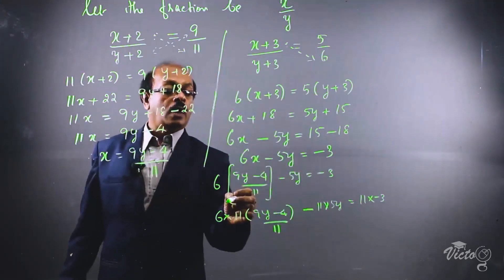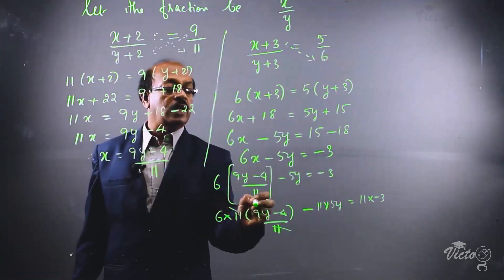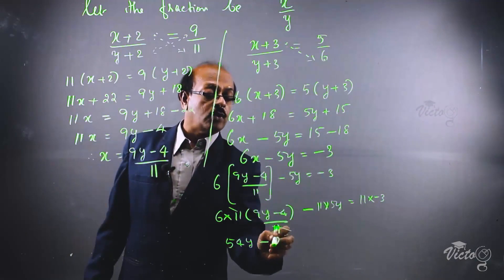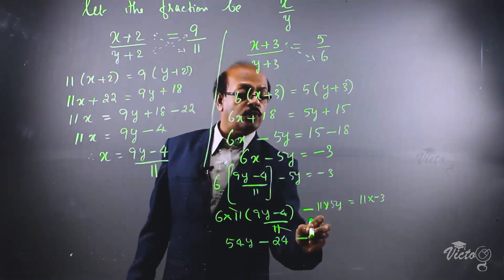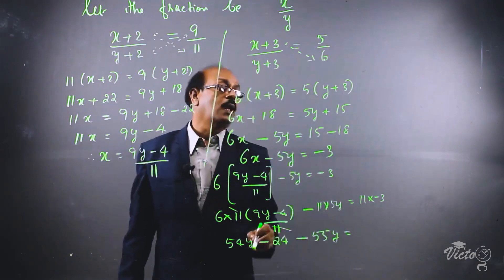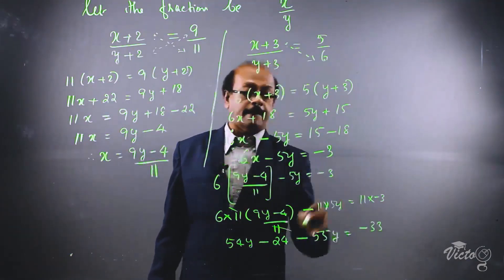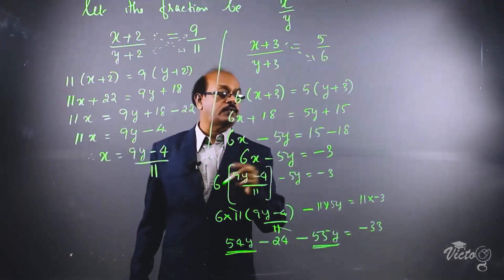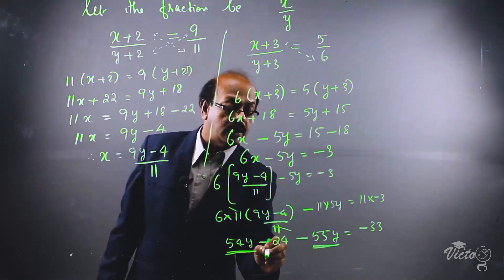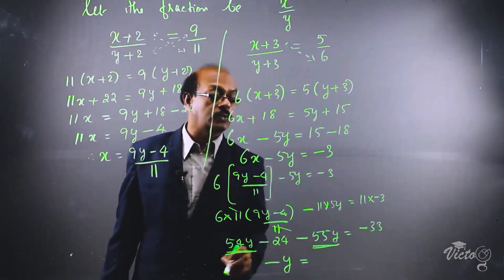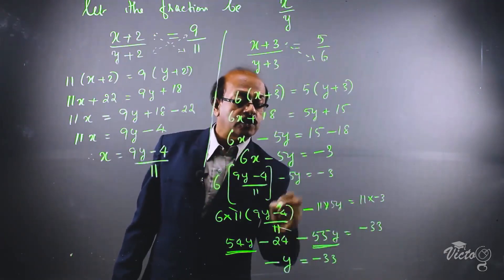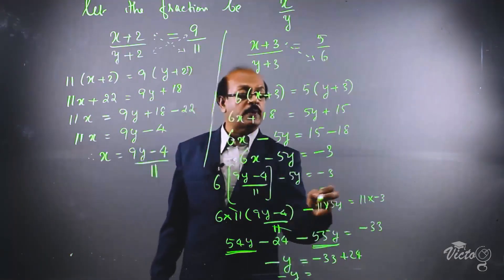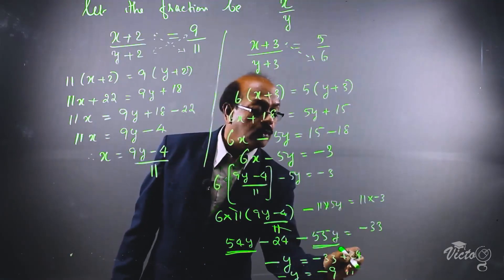After multiplying by 11, the 11s cancel: 6 × (9y − 4) − 55y = −33. Expanding: 54y − 24 − 55y = −33. Combining like terms: −y − 24 = −33. Moving −24 to the other side becomes +24: −y = −33 + 24 = −9.